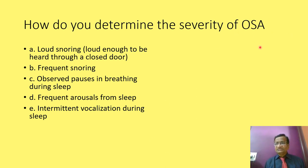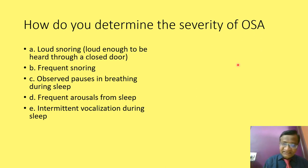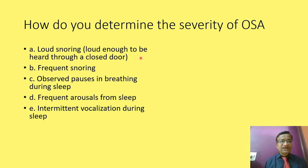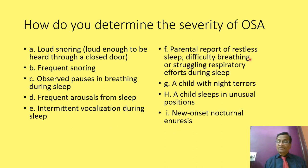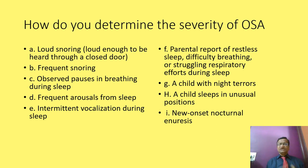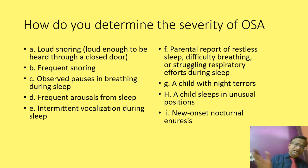With regard to adenotonsillitis specifically, I am touching on OSAS without going into full detail. Symptoms of severe OSA include loud snoring, frequent arousals, observed pauses in breathing, intermittent vocalization during sleep, parent-reported restlessness, night terrors, sleeping in unusual positions, and new onset nocturnal enuresis. These all point to severe OSA — the child snores, stops breathing, wakes up, and vocalizes.